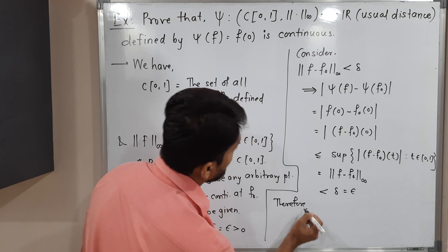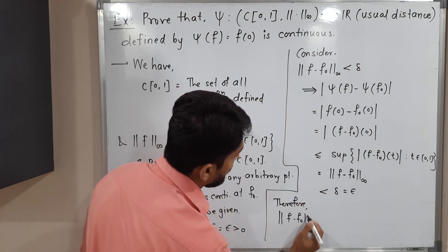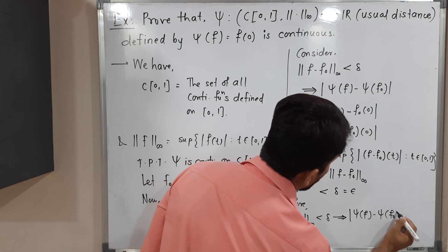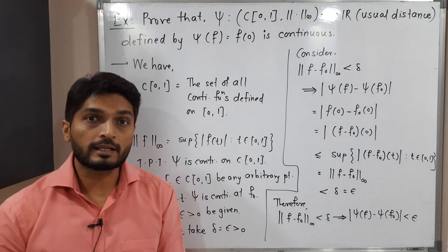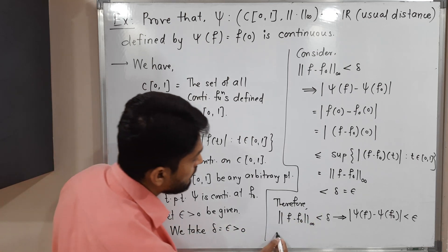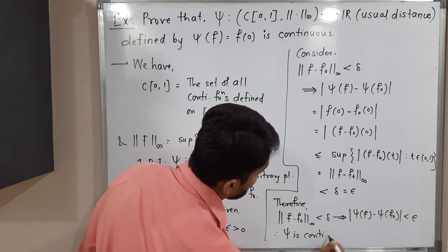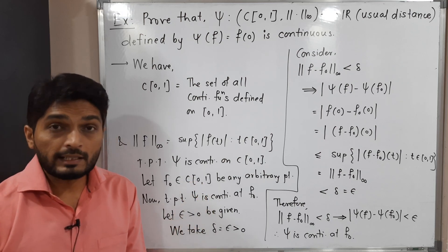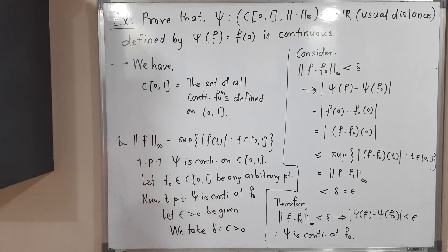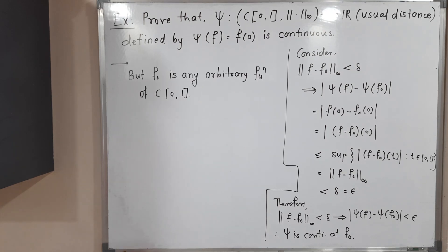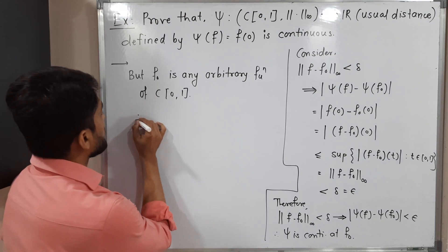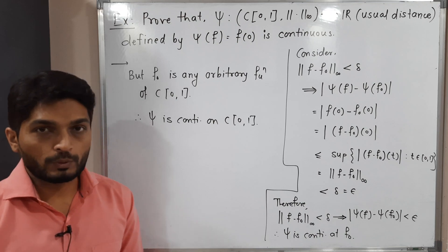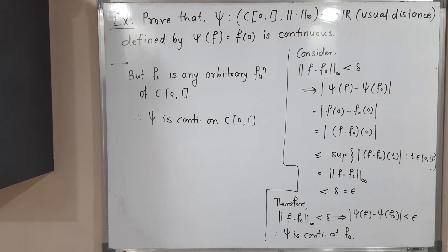We can conclude: ‖f − f₀‖∞ < δ implies |ψ(f) − ψ(f₀)| < ε. The definition of a continuous function is satisfied, so ψ is continuous at f₀. Since f₀ is any arbitrary point of C[0,1], therefore ψ is continuous on the entire domain C[0,1]. In this way we proved that ψ is a continuous function. Thank you, see you.